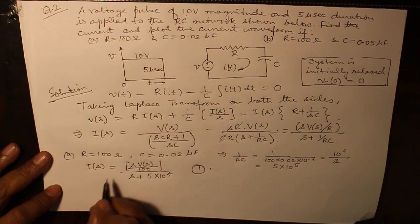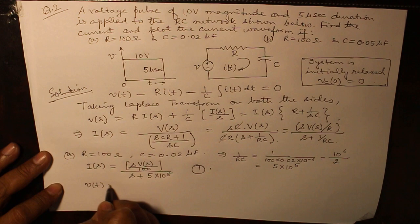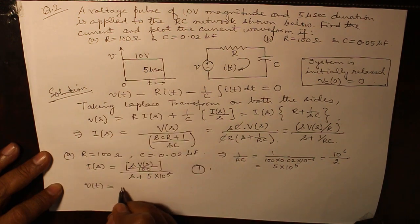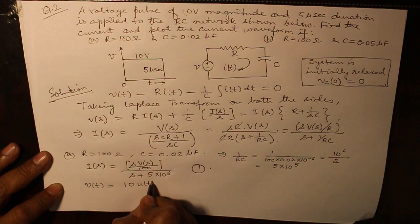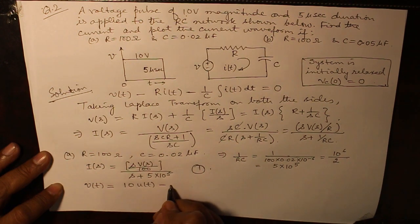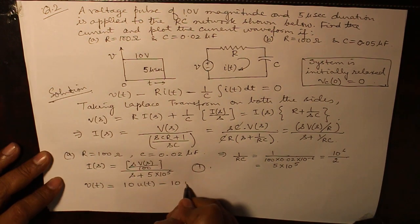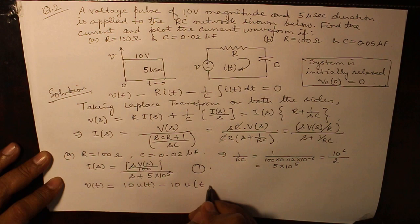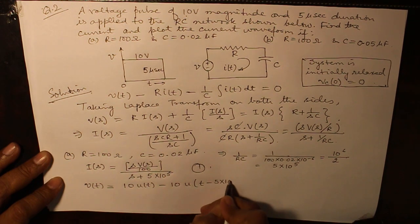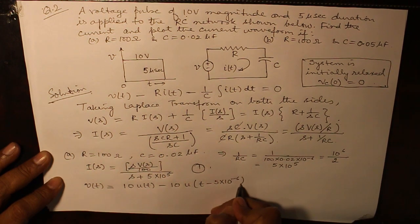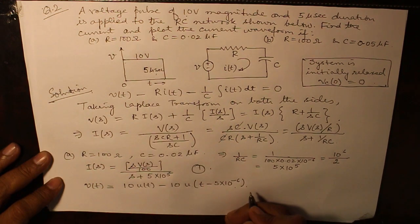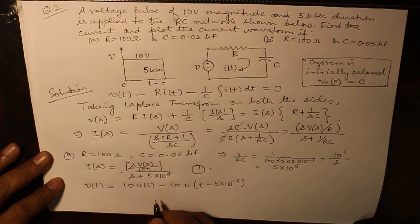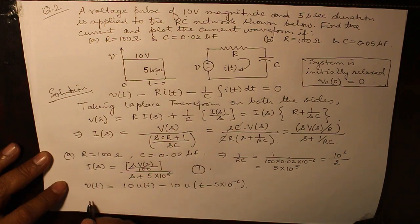V(t) as we can see, my signal synthesis becomes 10*U(t) minus 10*U(t minus 5 times 10 to the power minus 6). Changing the unit from microsecond to second.